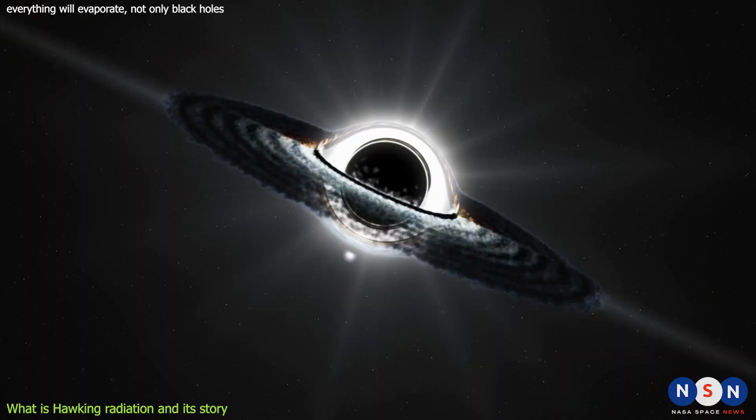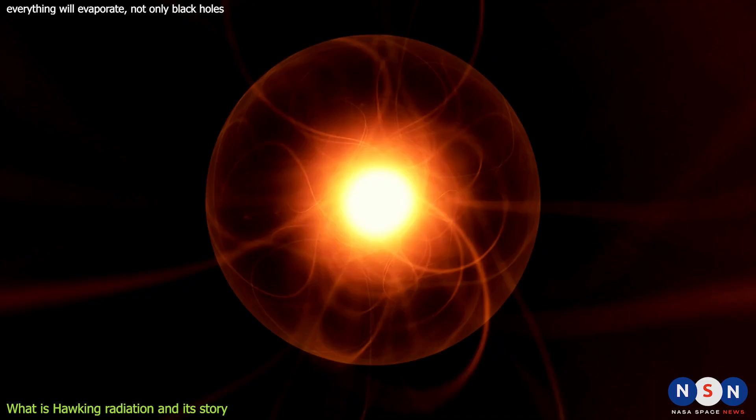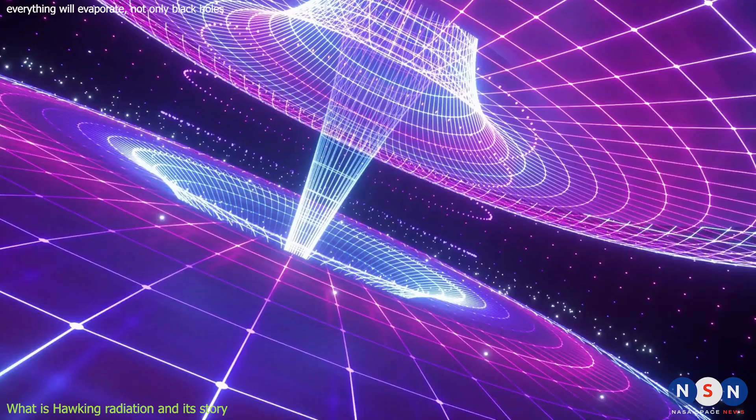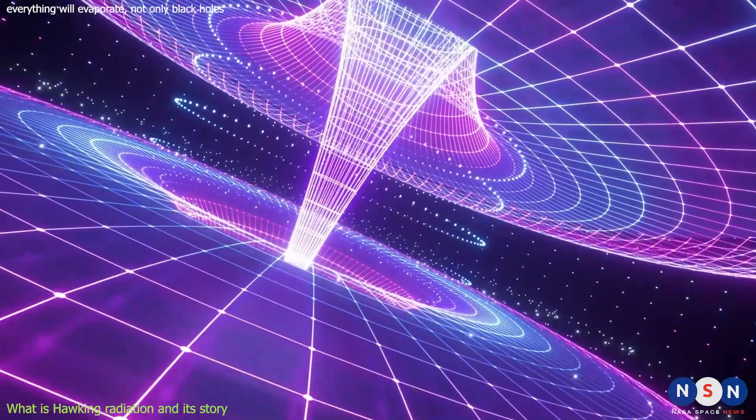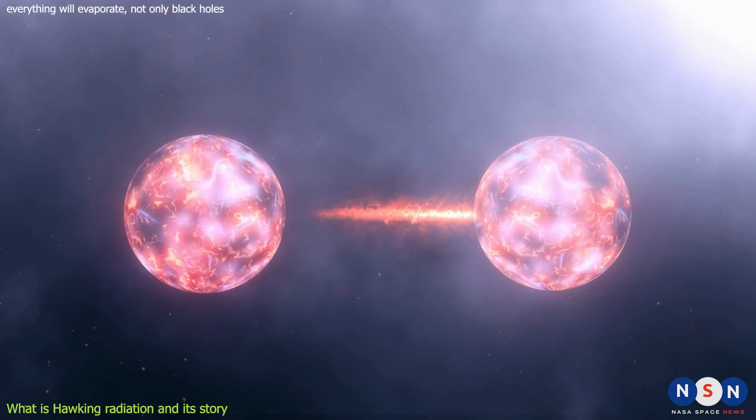Hawking radiation was a revolutionary idea that showed that quantum effects can influence gravity and vice versa. It also showed that black holes are not static and eternal, but dynamic and finite. However, Hawking radiation was not proven experimentally or theoretically. It was based on a semi-classical approach where gravity was treated classically while matter was treated quantum mechanically.